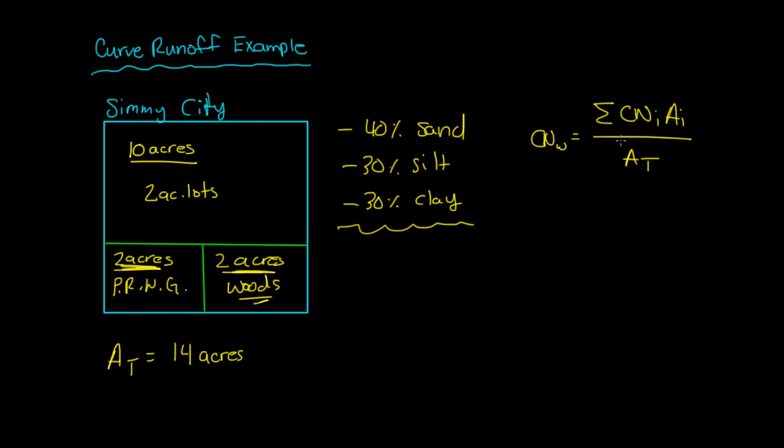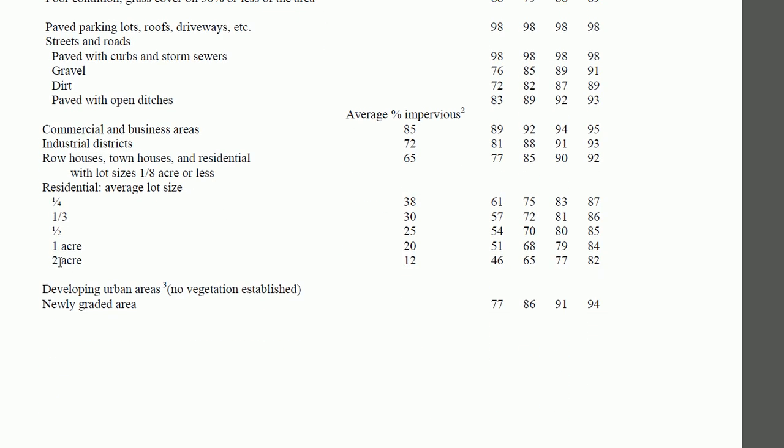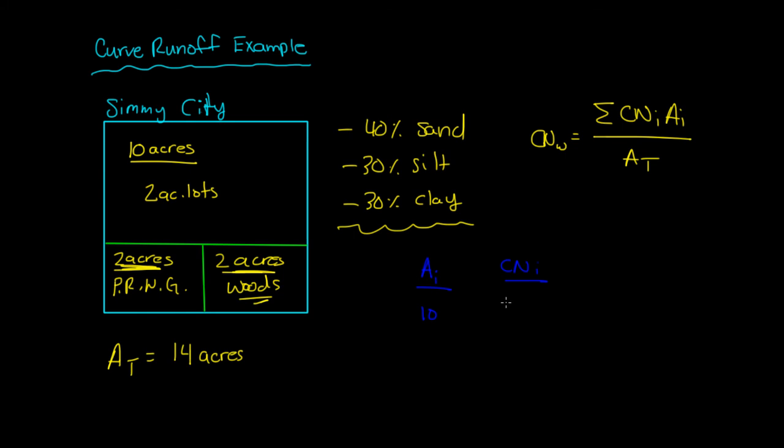So we need to calculate the curve runoff number for the whole city, but we need to know the curve numbers for each of the areas. So let's make a little chart: A_i, and then the curve runoff number i. So for area one, it's comprised of 10 acres of 2-acre lots. So if we look at this chart, if we go down here to residential average lot sizes, we have 2-acre lots, and we assumed it's group C, so group C would be 77.